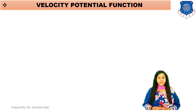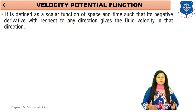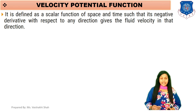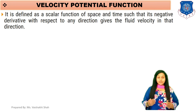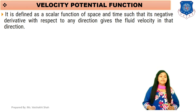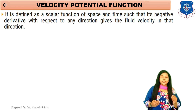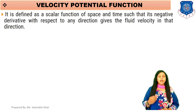Let's start with velocity potential function. The definition of velocity potential function is: it is defined as a function of space and time such that its negative derivative with respect to any direction gives the velocity in that direction. This is the definition of velocity potential function.